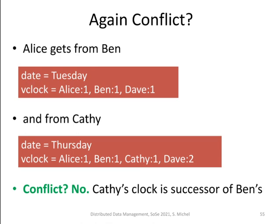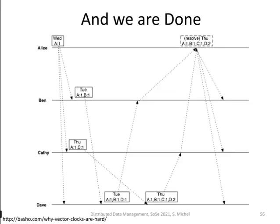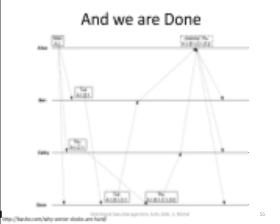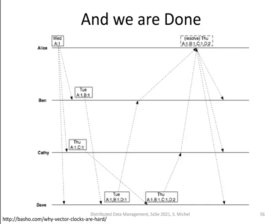Ben informs Alice about Tuesday; Dave informs Casey and Alice about Thursday. Alice receives two different proposals but sees that the clock from Dave's final message is larger than or equal to the other clock, so there is no conflict — everyone is happy and they go to dinner on Thursday.